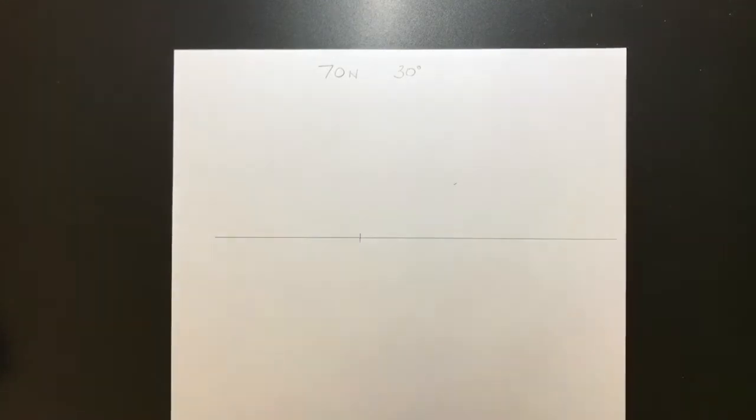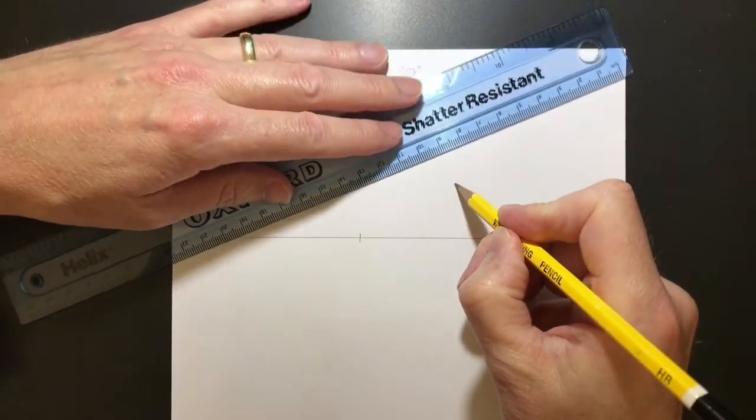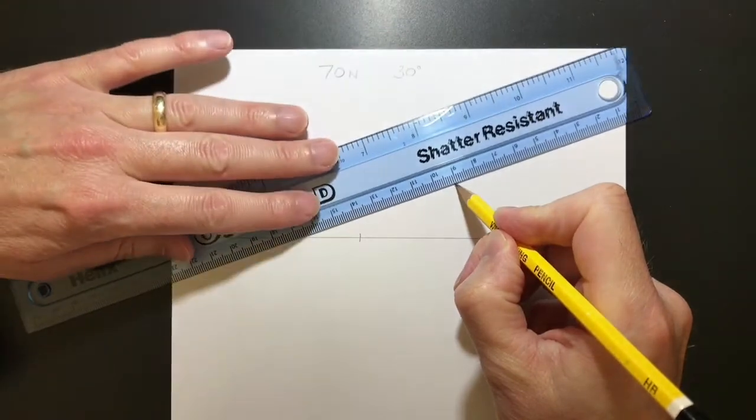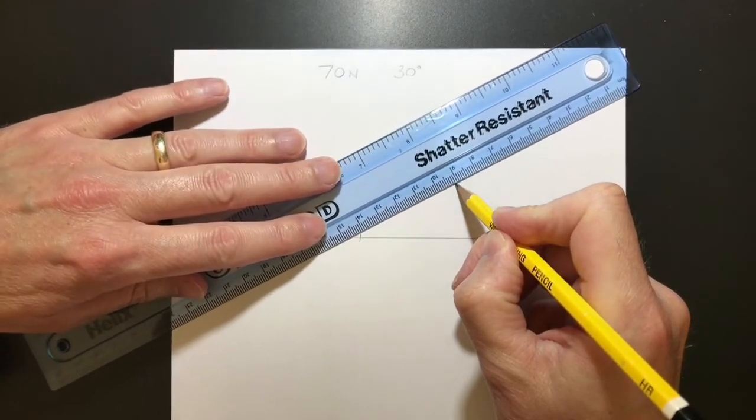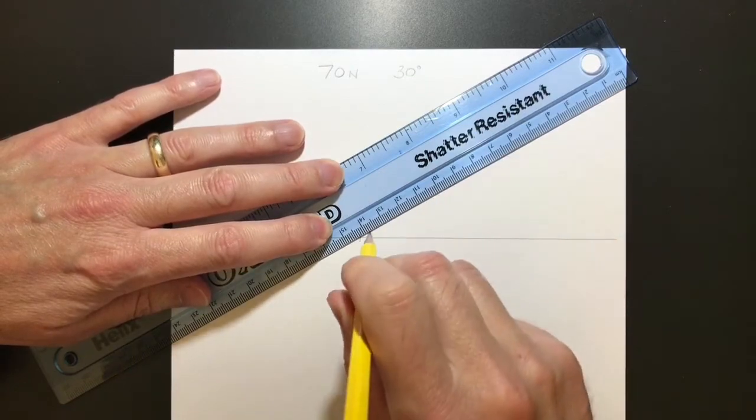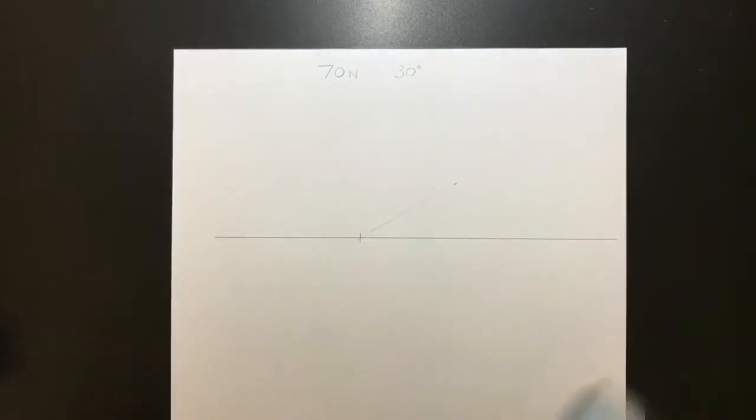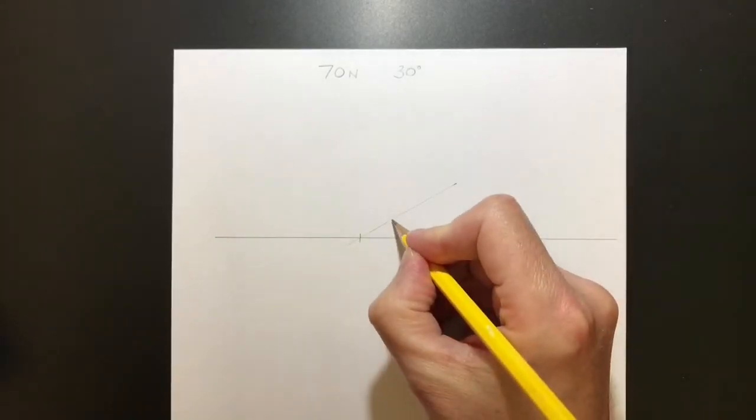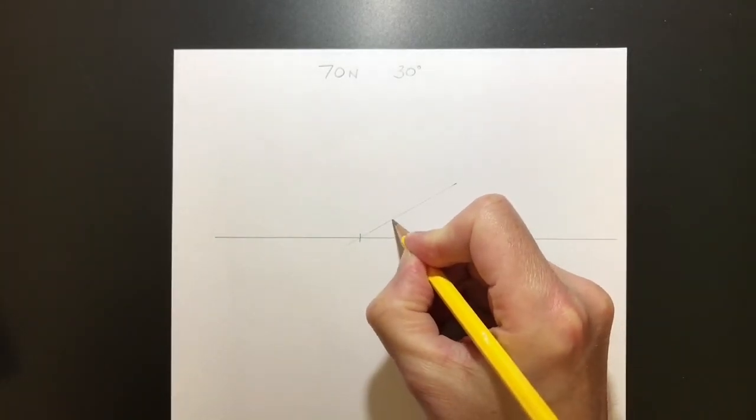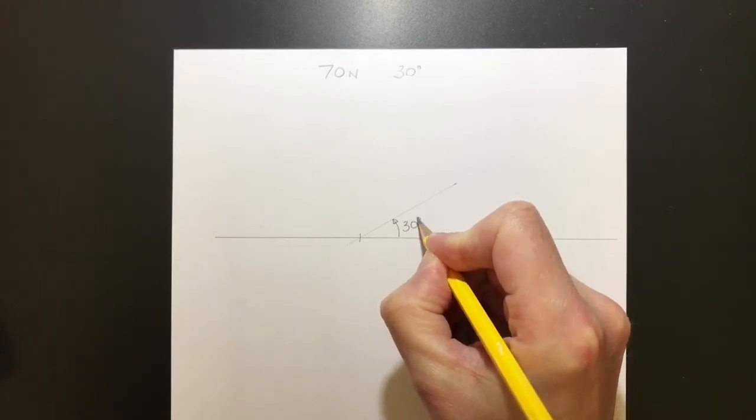I can then take my rule, put my pencil on that point there and slide the rule up to the pencil and round to the cross. Then we have our 30 degree direction. I'm just going to label that: it's 30 degrees up from the horizontal.